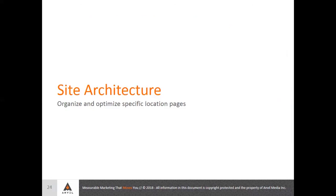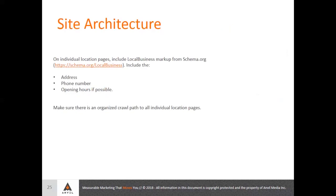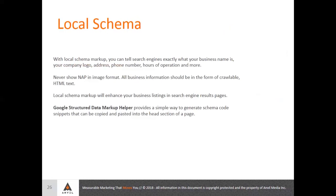One of the last things we'll talk about is your site architecture. First is utilizing local schema markup, and then we'll talk about ensuring there's an organized crawl path to all of your individual location pages. With schema markup, what you can do is mark up different elements on the page — such as your business name, company images, the company logo, the address, phone number, hours of operation, and more. What this markup does is specifically tell Google what each element is, so it doesn't really have to guess at all what you're talking about.